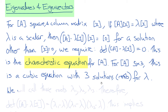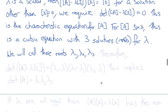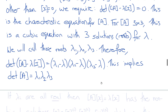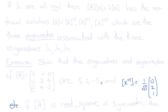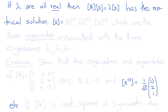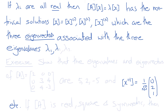Knowing that λ1, λ2, λ3 are roots of the characteristic equation, we can write the equation as (λ1 − λ)(λ2 − λ)(λ3 − λ) = 0. Looking at the constant term, we can deduce that the determinant of A is the product λ1·λ2·λ3. If all eigenvalues are real, then the equation Ax = λx has non-trivial solutions x1, x2, x3 — the eigenvectors associated with the three eigenvalues λ1, λ2, λ3.